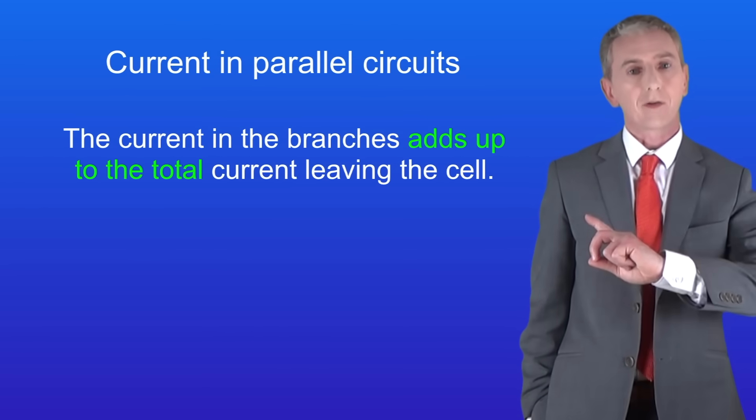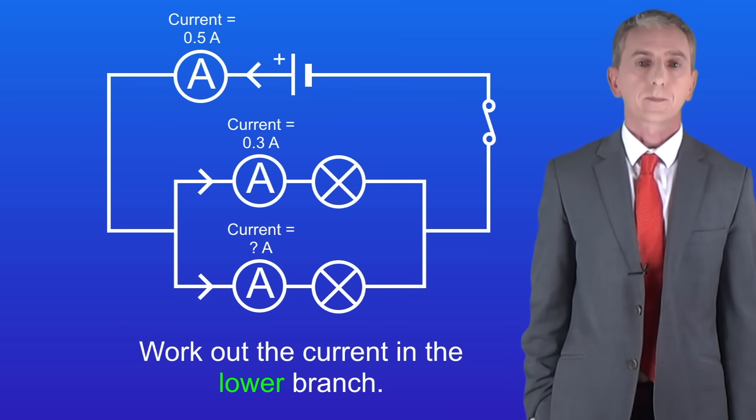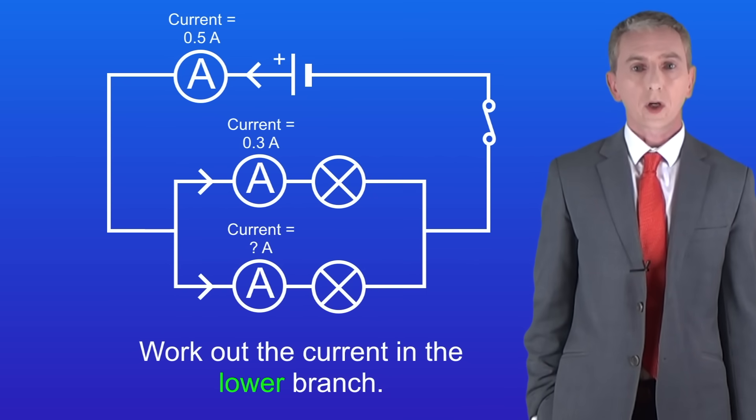So here's the key fact about parallel circuits. The current in the branches adds up to the total current leaving the cell. So here's a question for you to try. I want you to work out the current in the lower branch. Pause the video now and work this out yourself.